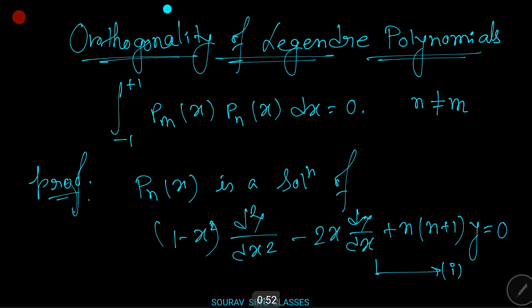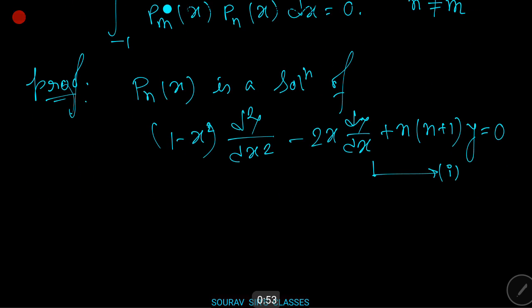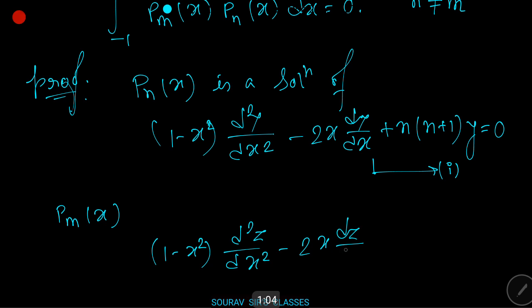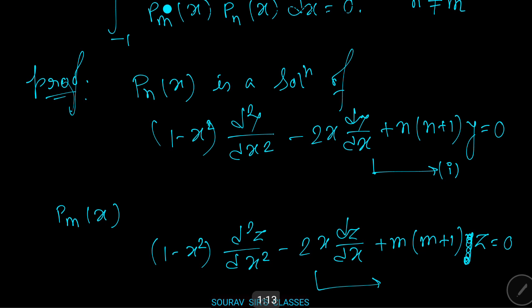And Pm(x) is the solution of: (1 minus x squared) times d²z/dx² minus 2x times dz/dx plus m(m+1)z equals zero. This is equation number two.